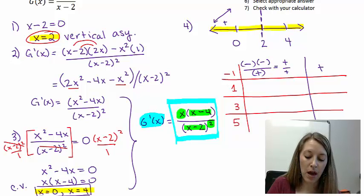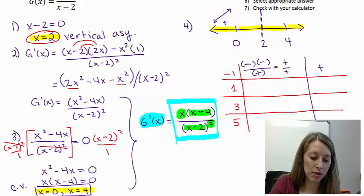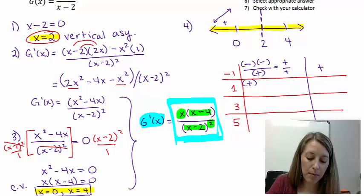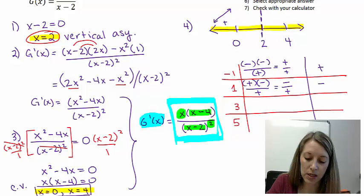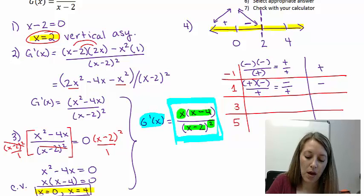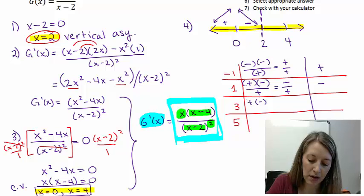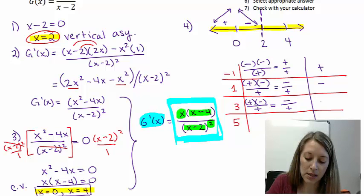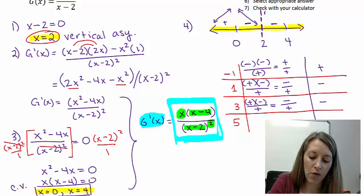Now I substitute the other three test points into the factored derivative. For positive 1: x gives positive 1, x minus 4 gives negative 3, and the denominator is always positive. So that's negative over positive — negative. That tells me it's decreasing between 0 and 2. For test point 3: x gives positive 3, x minus 4 gives a negative, denominator is always positive — so negative over positive, or negative, meaning it's decreasing between 2 and 4.